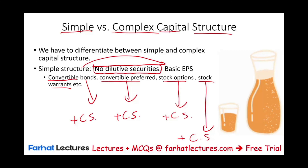Why is that relevant? When we compute earnings per share, we take net income divided by the number of common shares outstanding. That's fine if we are computing the basic. But if we have dilutive shares, there is the possibility of the denominator going up. If the denominator goes up more than the numerator, this number could go down. So if you have dilutive securities, there is the potential for your earnings per share to be lower — if the convertible bond converts, if the preferred stock converts, if the stock option is exercised.